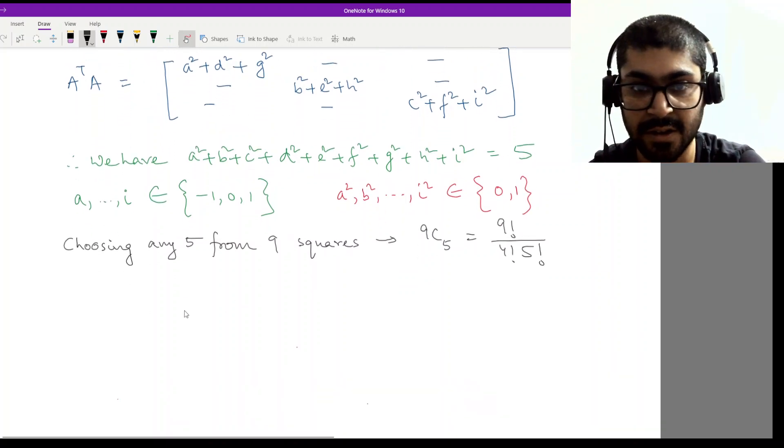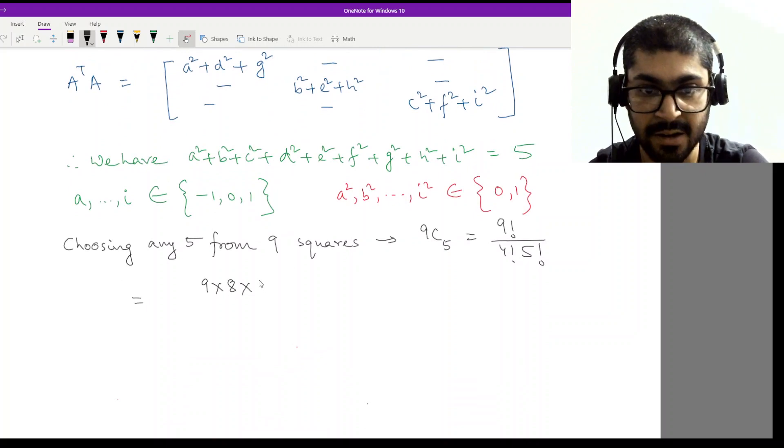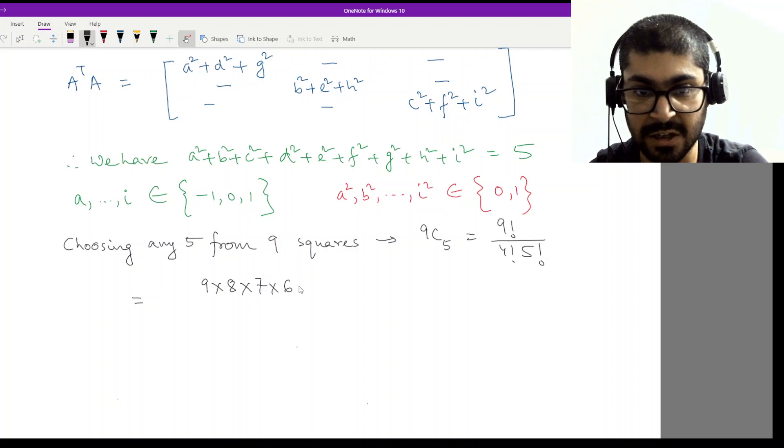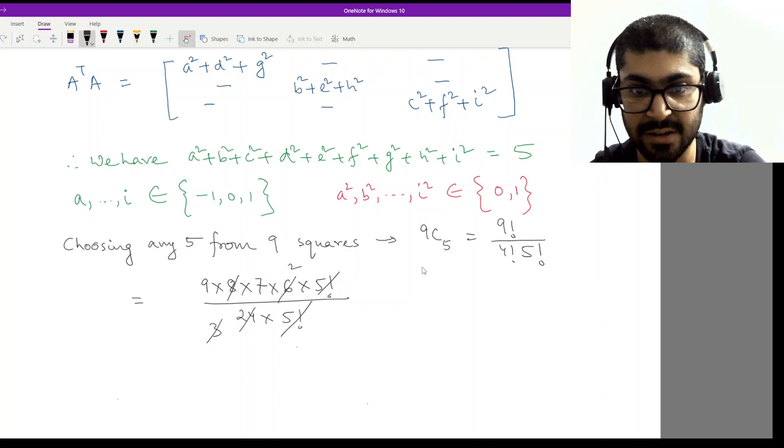What is this? Nine factorial by four factorial into five factorial. This will be equal to 9×8×7×6×5! divided by 4!×5!. This gets cancelled out, and I have 3 here and 2 here. So 9×7 is 63 times 2 is 126.